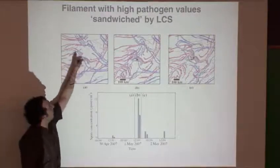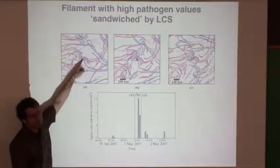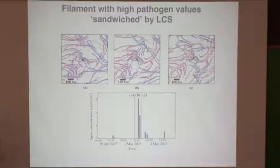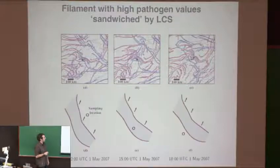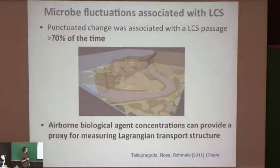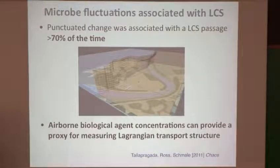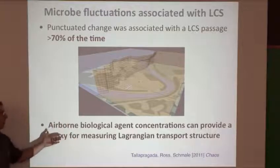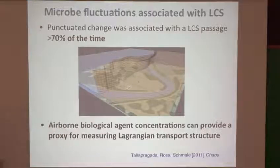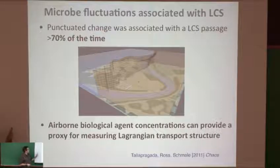In a geographic view of Virginia, our sampling location is the open circle. The parcel we sample is the black circle, sandwiched between two repelling LCS surfaces. We had expected things to collect on attracting surfaces, but this is what we observed. The LCS do seem to influence the temporal patterns in concentration. Statistical analysis found that a punctuated change was associated with LCS passage over 70% of the time — meaning LCS are structuring these airborne biological agent concentrations. Conversely, airborne concentrations provide a proxy for measuring Lagrangian transport structure, and there are abundant microbes out there.